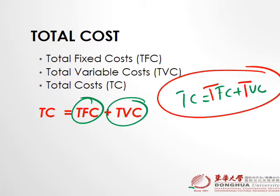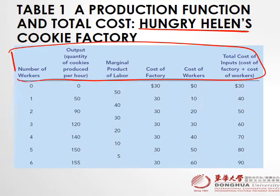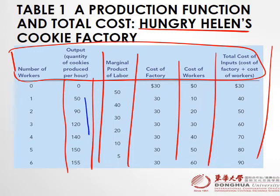We have Table 1, which shows Hungry Helen's cookie factory. By looking at this table there is meaningful information here. Even if we do not have a labeled row, we can find out which cost belongs to fixed or variable. The cost which is fixed with the level of output is fixed cost — you can see the cost of the factory is fixed as output increases.